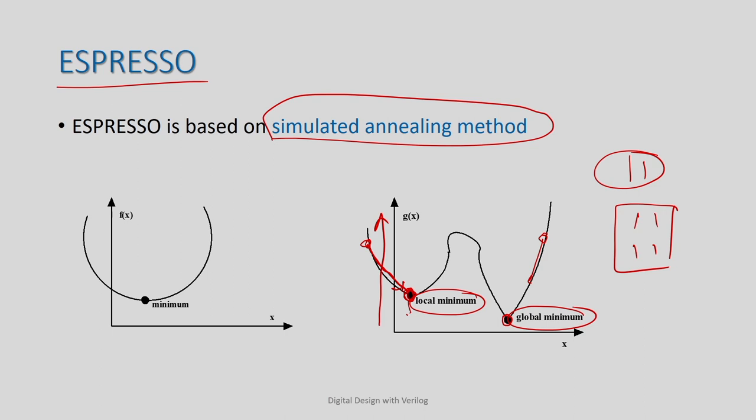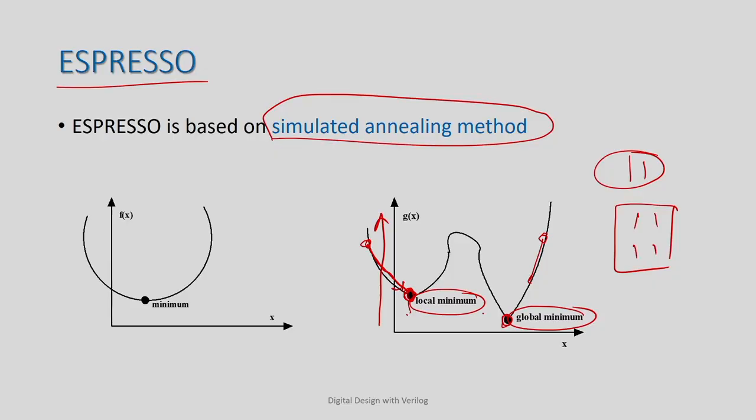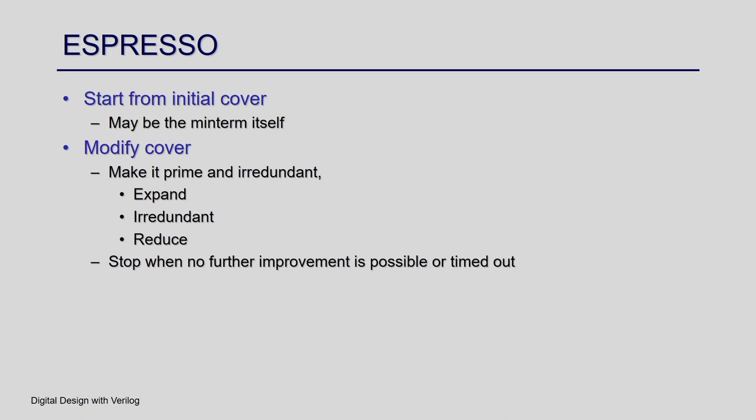In the simulated annealing approach, you start from some starting point and try to optimize your cost function — for switching function minimization, that is the cost of the minimal expression — and then you get a local minimum. Once you reach this local minimum, this may be the best solution if you do not want to go further, or you can restart the whole process from some other starting point and try to optimize again. If you keep doing this over time, you will most likely end up getting the global minimum. This is what the simulated annealing approach does, and this is what Espresso does.